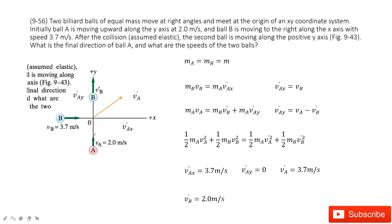Chapter 9 is about linear momentum. In this problem, we have A and B, two identical balls, so the mass is equal. Initially, ball A has velocity pointing in the y direction with magnitude 2.0 meters per second. Ball B is pointing in the x direction with its magnitude given.